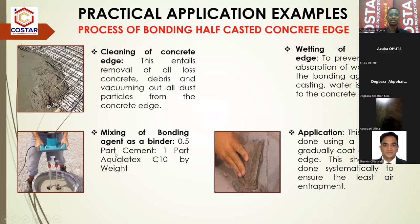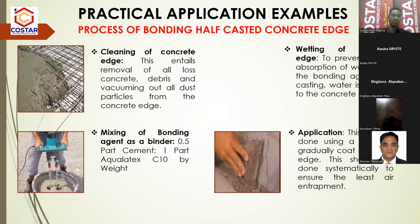The next practical example is the process of bonding half-cast concrete. Where you've cast your concrete halfway and need to wait several hours before completing the casting, you will need to use a bonding agent at the edges before continuing — especially when the previous casting has already set. What you do is clean off the edges, wet them, and mix your bonding agent: 0.5 parts cement to one part Aqua Latex liquid. Apply it to the edges of the concrete before continuing your casting. That's how to treat half-cast concrete edges.